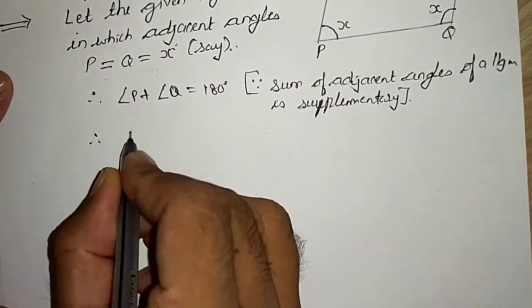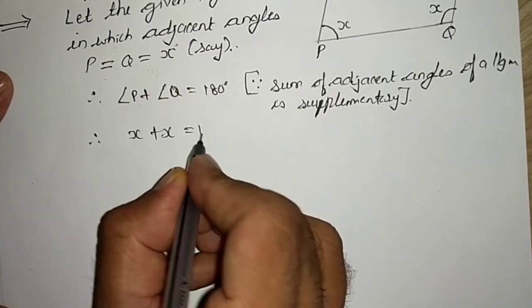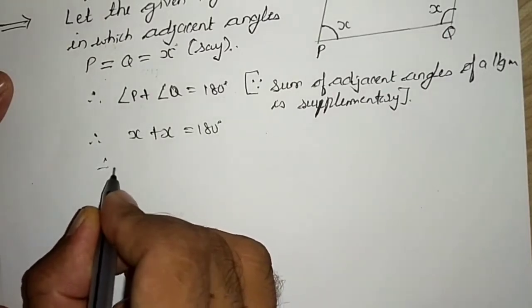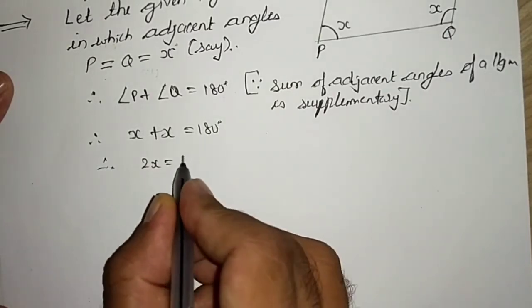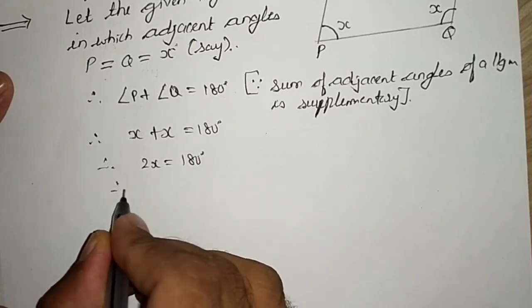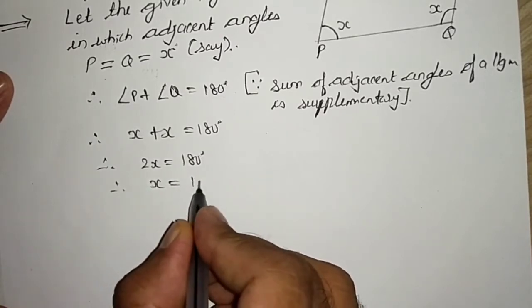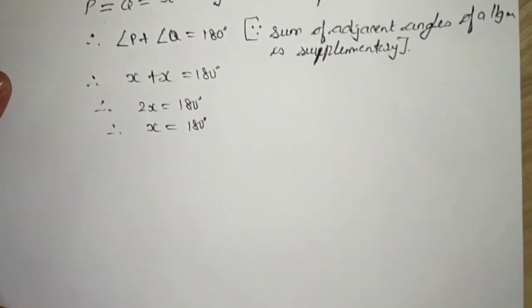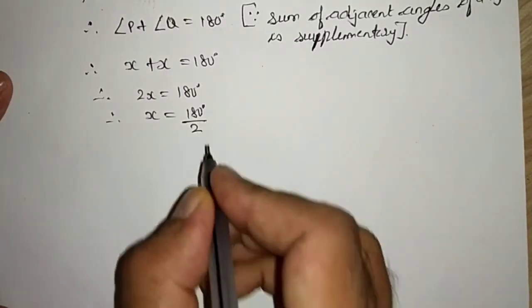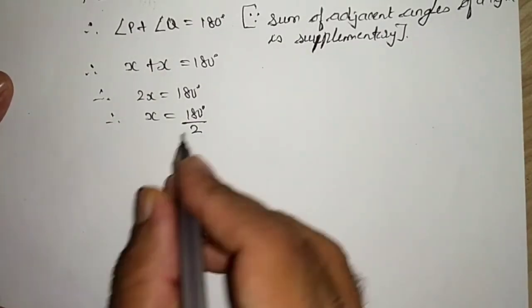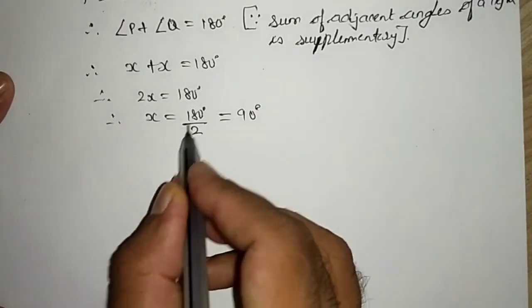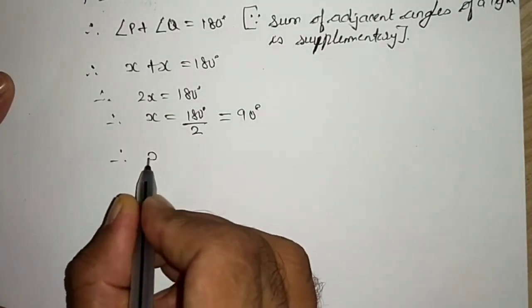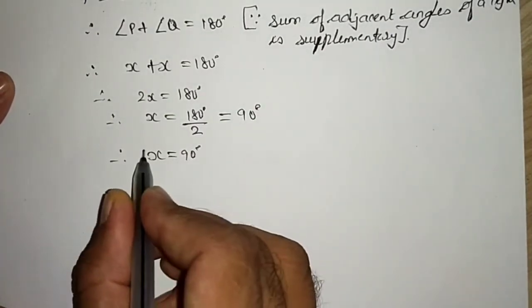And what is the angle? x plus x is equal to 180 degrees. Therefore, 2x is equal to 180 degrees. We have to find x, so we will keep x as it is and take the 2 in division, so we will get x equals 90 degrees.